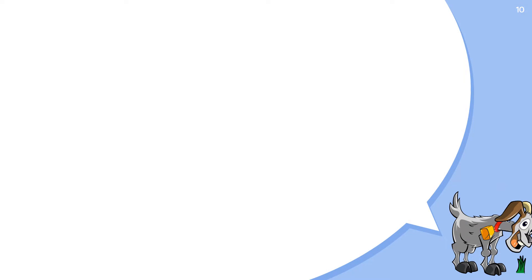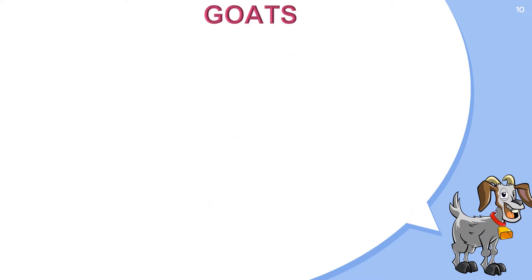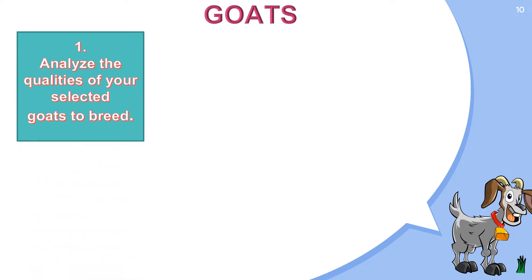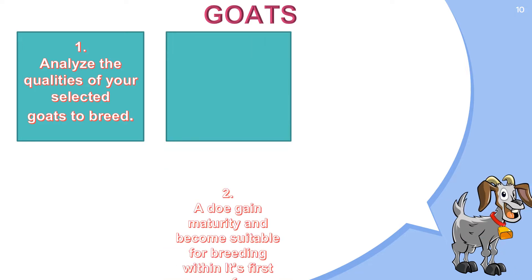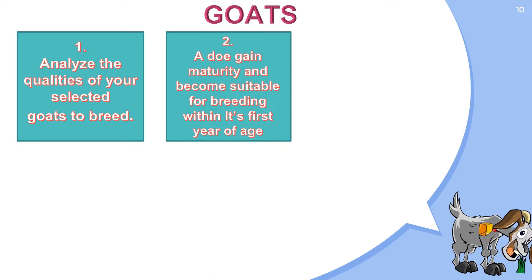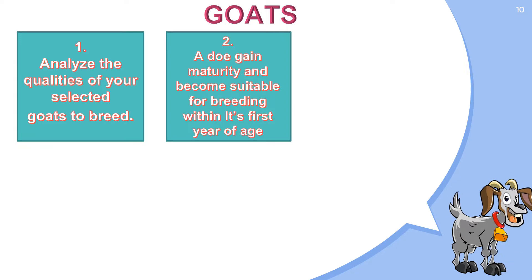The next animal that we have are goats. If you want to breed goats someday, you have to do the following. First, analyze the qualities of your selected goats to breed. Analyzing the goats perfectly will help you determine whether the goat you have can be bred successfully or not. Second, a doe gains maturity and becomes suitable for breeding within its first year of age. A doe is a female goat. You should not breed a doe before its first birthday to get better quality kids and other goat products. For the third one,